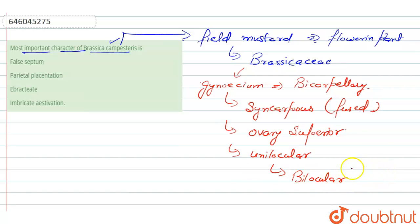This occurs due to the development of a false septum. This false septum is also called replum. So here, this false septum is the characteristic feature of Brassica campestris. We can say that it is the most important character of the Brassicaceae family because due to this, the unilocular becomes bilocular.